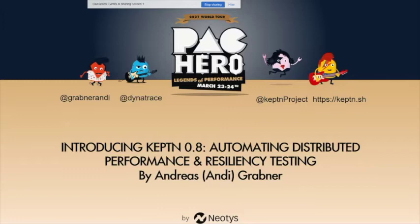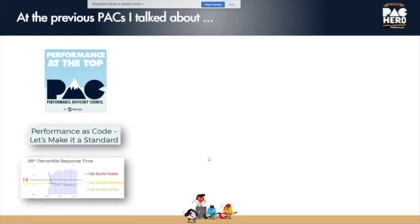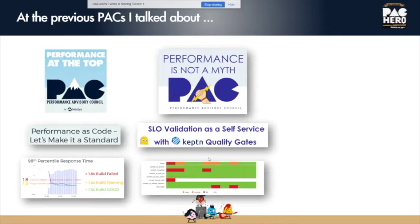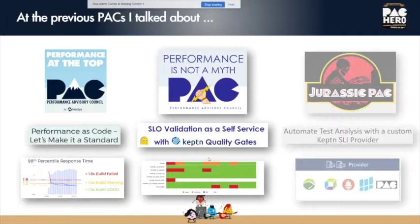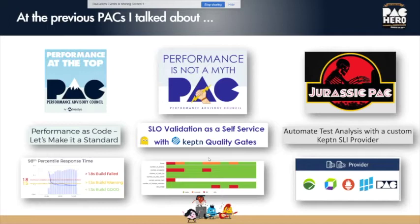I've put some contact info under the four cartoons — my Twitter handle is GrabnerAndy, I work for Dynatrace, and the open source project is at keptn.sh where you'll find our GitHub and Slack. At previous PAC events — Charmonie, Santorini, and the Jurassic PAC — I covered performance as code, SLO validation with Keptn quality gates, and extending Keptn with your own SLI data provider. If you're new to Keptn, check out those previous sessions.